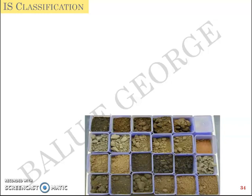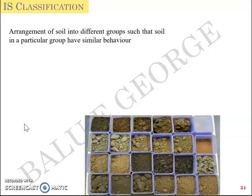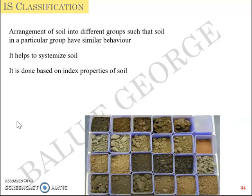In this particular video we'll start with the Indian Standard Classification of soil. Classification in general is nothing but arrangement. When you talk about classification of soil, it's about the arrangement of soil into different groups such that soil in a particular group will have similar behavior — like arranging students based on CGPA or height. It helps to systemize the soil, done based on index properties, and is useful in providing a common language between engineers.